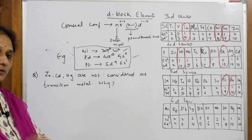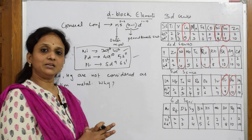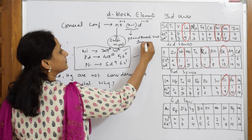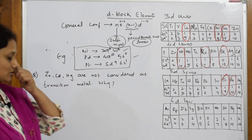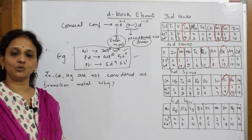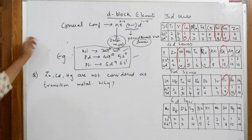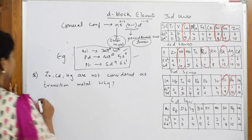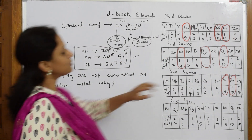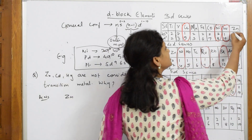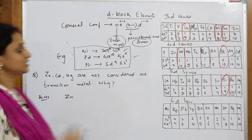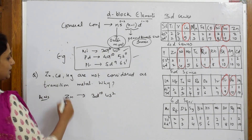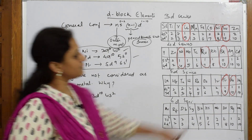Remember: in D block elements, the electron enters into the inner shell while the outer shell is NS. Now let us start with questions. The first common question is: zinc, cadmium, and mercury are not considered transition elements — why? For zinc, the configuration is 3D10 4S2. The D shell is completely filled.